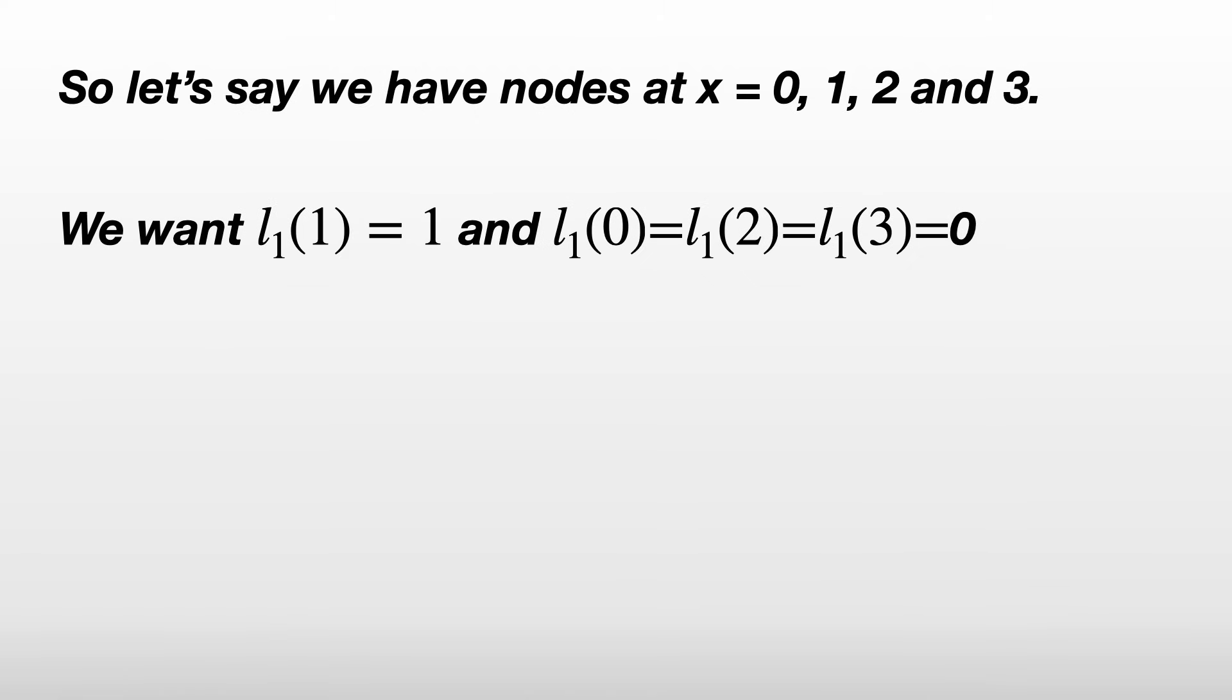Anyway, L_1 should be 0 at x equals 0, 2, and 3. So we'll guess our Lagrange polynomial will be something like L_1*(x) equals (x - 0)(x - 2)(x - 3).